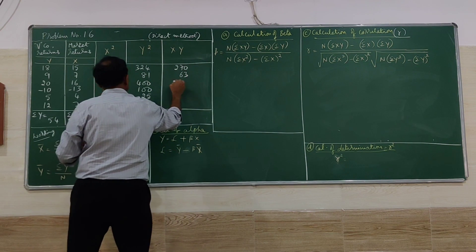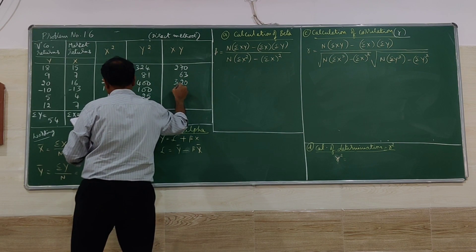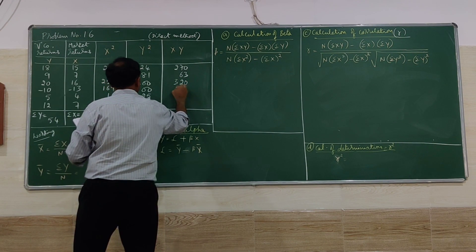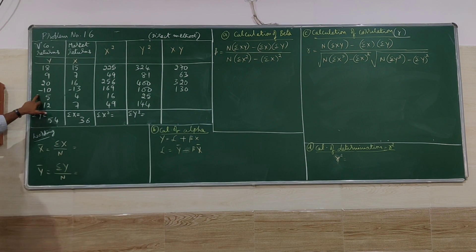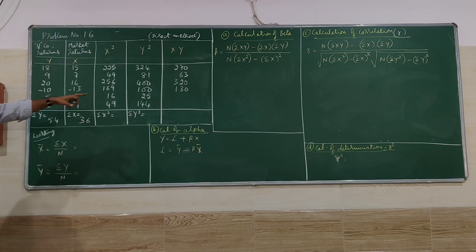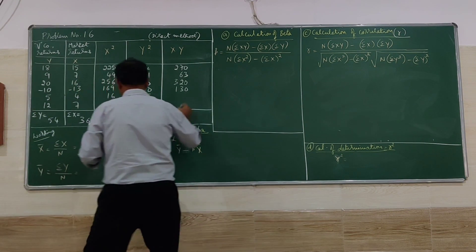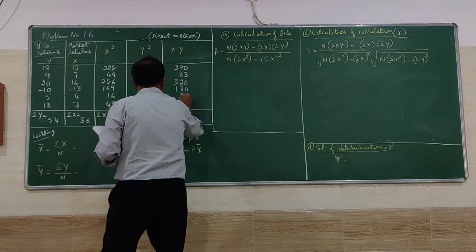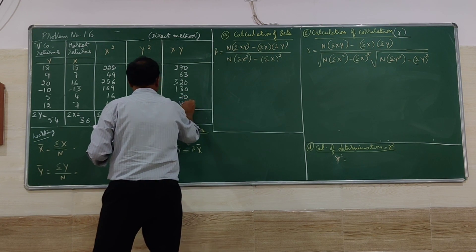Continuing the x·y column: 20×16 = 320, minus 10 × minus 13 becomes plus 130, 5×4 = 20, and 12×7 = 84.